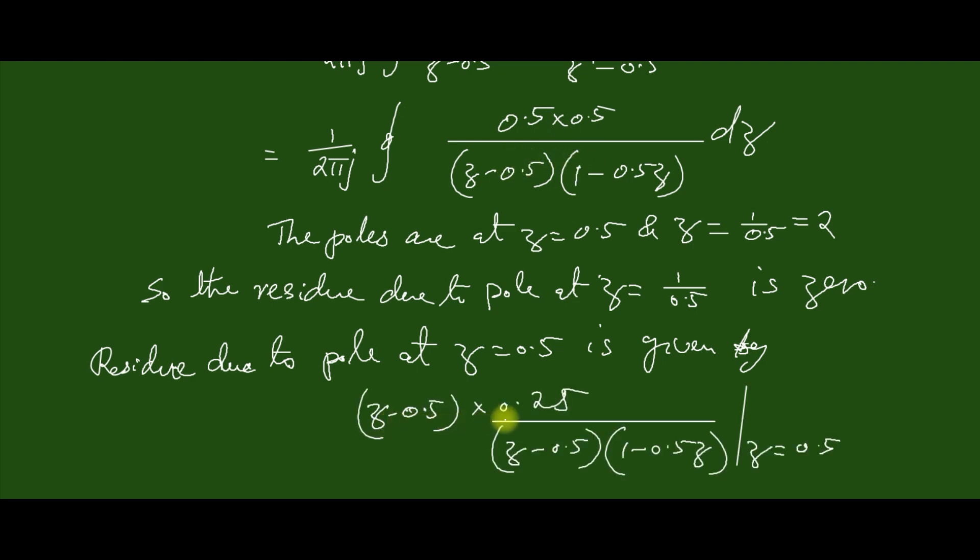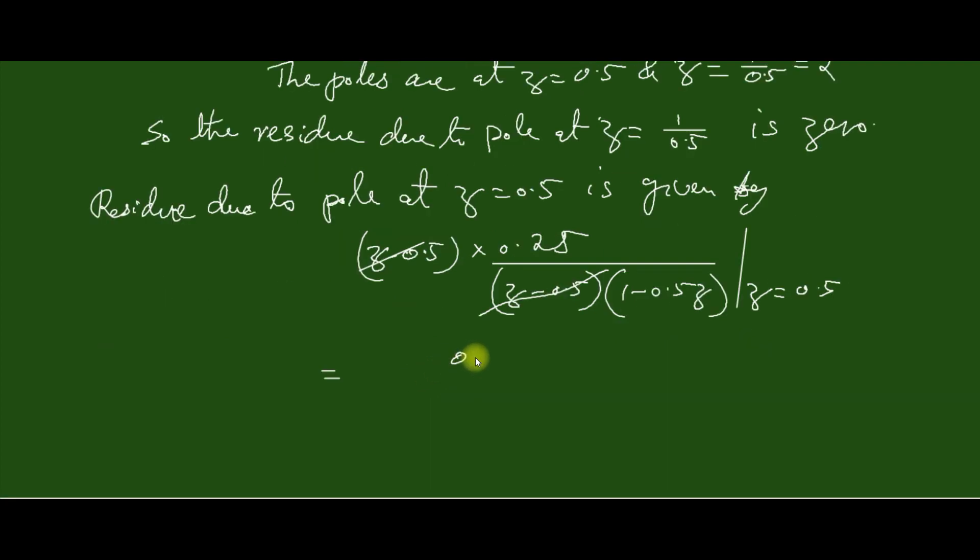This is (z-0.5) into this part. So here these two terms will cancel, then 0.5 divided by this step. It is equal to 0.25 divided by (1-0.5×0.5). Computing we get which is equal to 1/3.